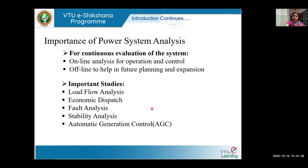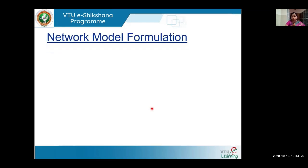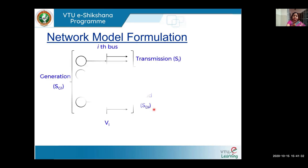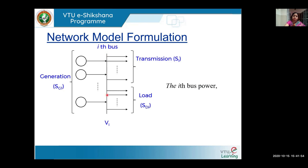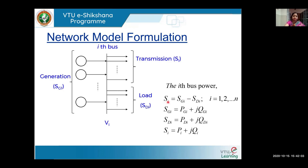Let us start network model formulation. To understand this concept, consider a bus connected with a number of generators and a number of nodes. What is the net power it will transfer to the rest of the network? Taking any bus — called the Ith bus — it can be any bus from bus number 1 to bus number N. The net complex power at this Ith bus will be the generated power minus the demand power.